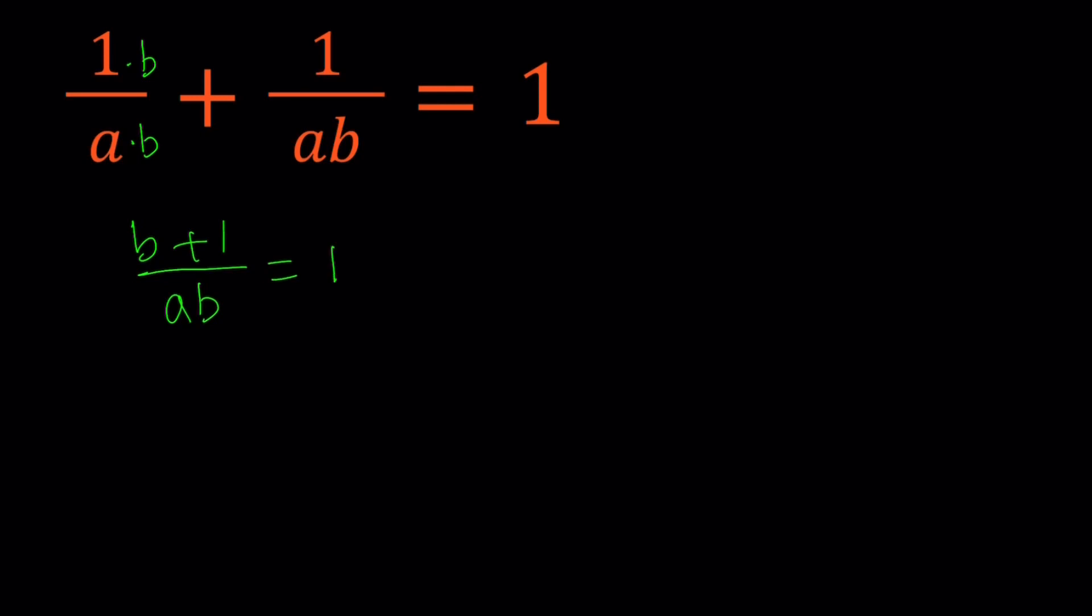And then we're going to cross multiply. Obviously, we have to make sure that a and b are not equal to 0. Because if one of them is 0, then this expression is going to be undefined. So they have to be different from 0.